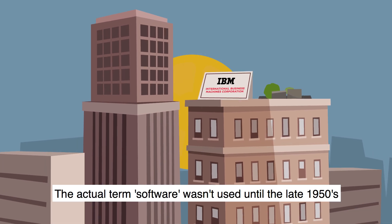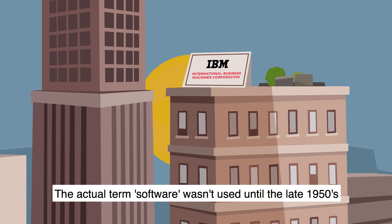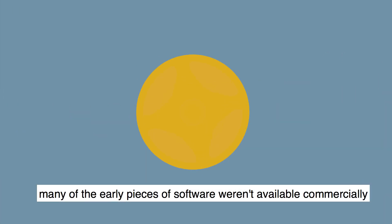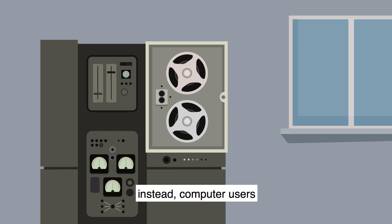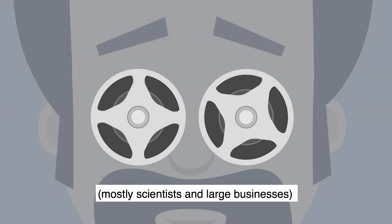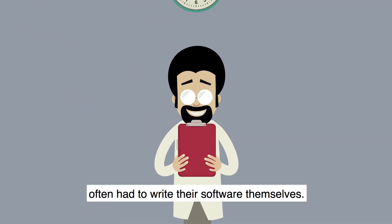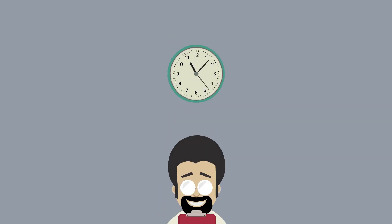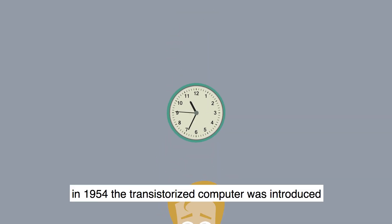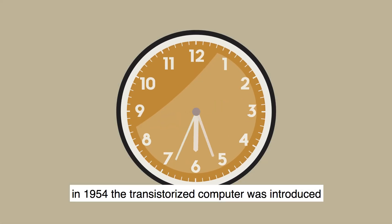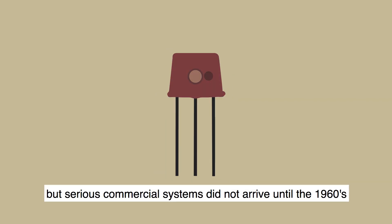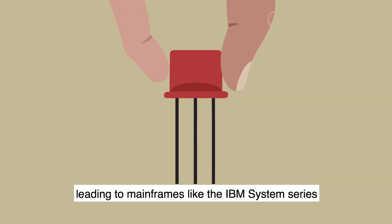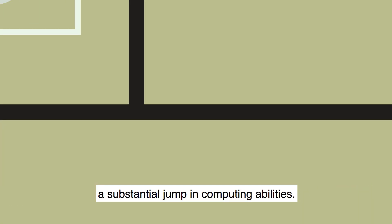The actual term 'software' wasn't used until the late 1950s. Many of the early pieces of software weren't available commercially — computer users, mostly scientists and large businesses, often had to write their software themselves. In 1954, the transistorized computer was introduced, but serious commercial systems did not arrive until the 1960s, leading to mainframes like the IBM system series — a substantial jump in computing abilities.